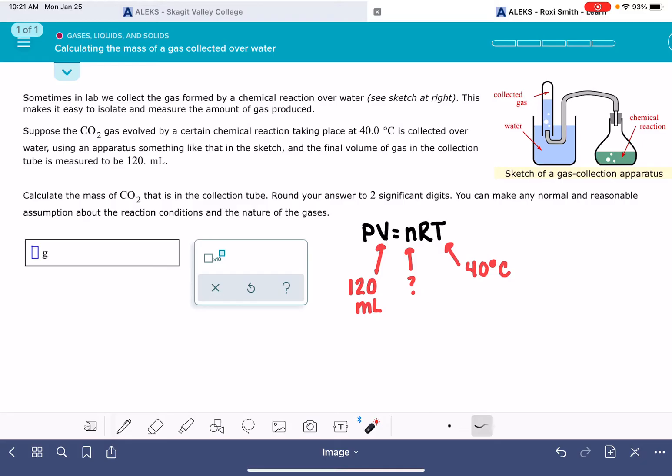First of all, because this is an open system, there isn't any kind of closure on this container right here. The atmospheric pressure pushing down on this water helps to equalize and stabilize the pressure in this space above the gas.